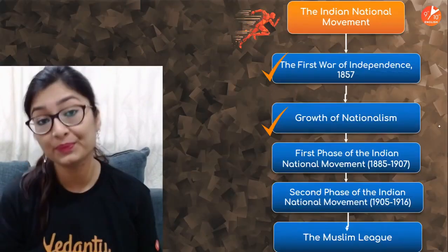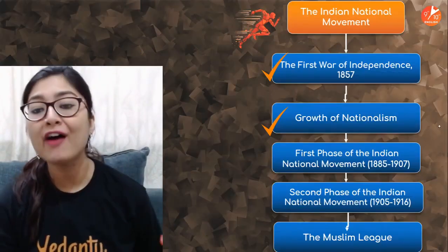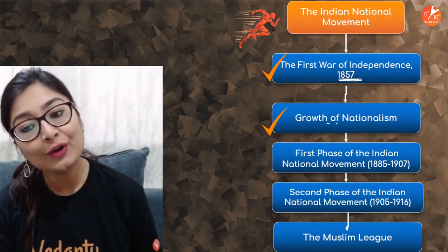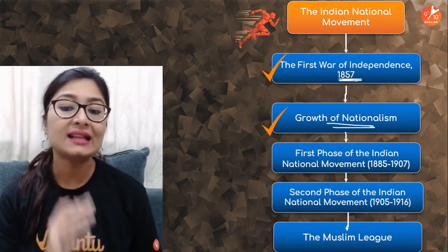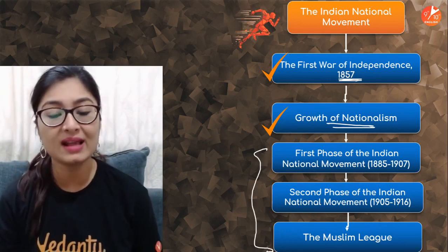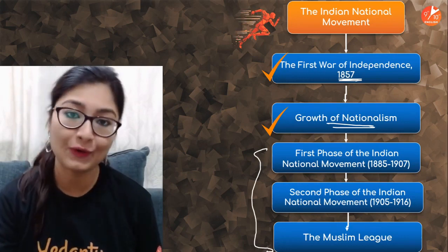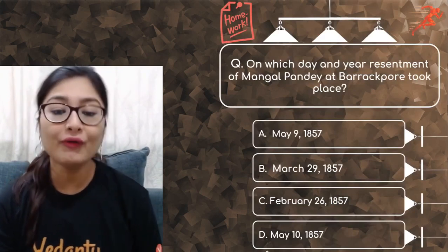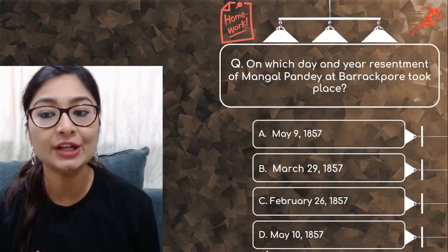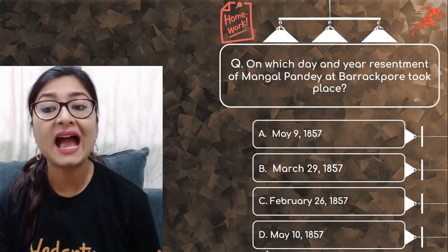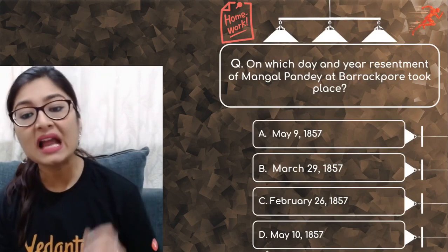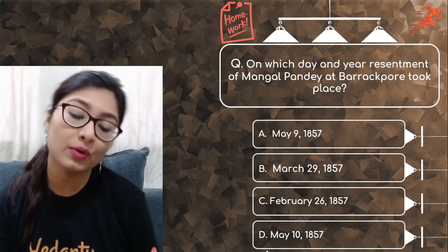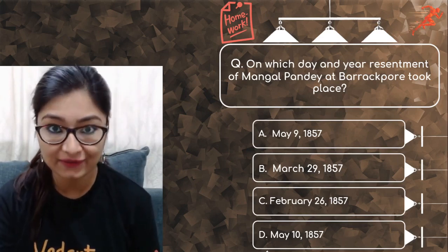With this we have finished the First War of Independence of 1857 and the Growth of Nationalism. In the next session we will finish the rest of these topics. Now let's quickly look at the homework question of today's session: On which day and year did the resentment of Mangal Pandey at Barrackpore take place? Options: May 9, 1857; March 29, 1857; February 26, 1857; or May 10, 1857. Put your answers in the comment box below.